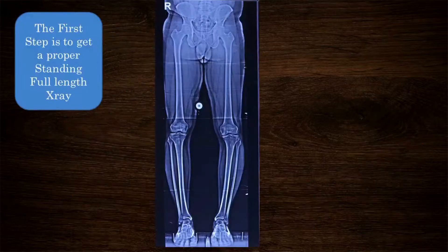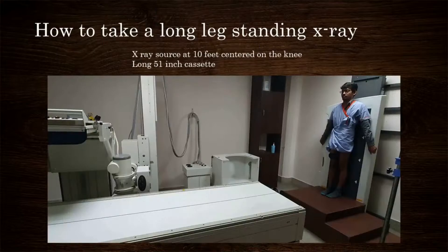A standing full-length X-ray with the patient bearing weight on both limbs is very crucial for planning osteotomy. The X-ray source is positioned 10 feet away from the patient and a long cassette can be used, or a cassette deck with image processing software as shown in the image.